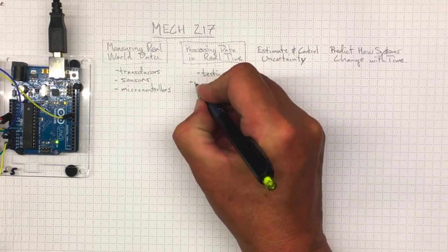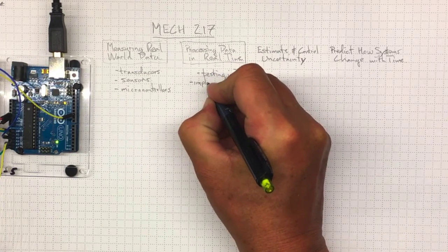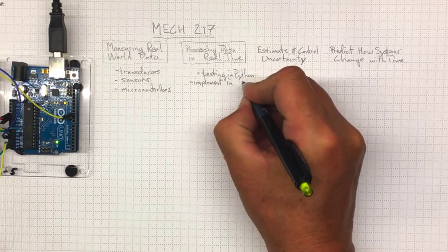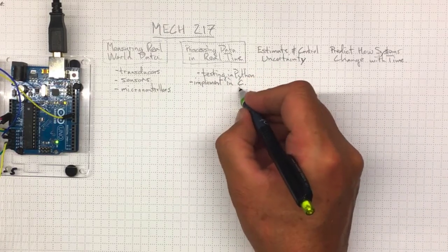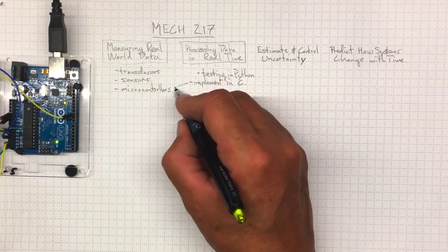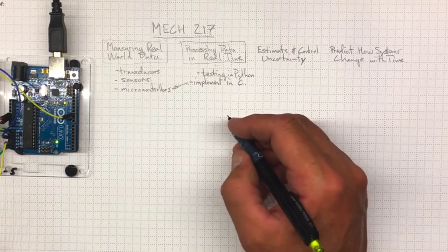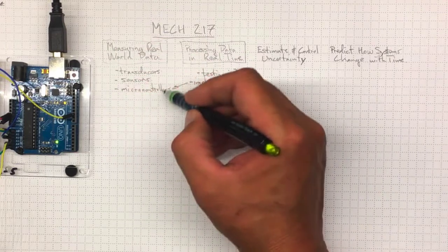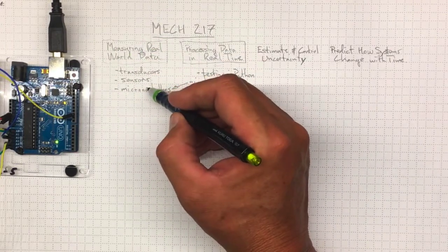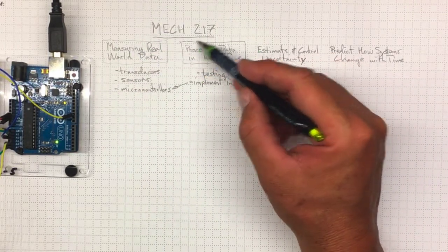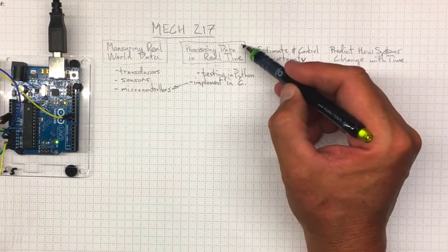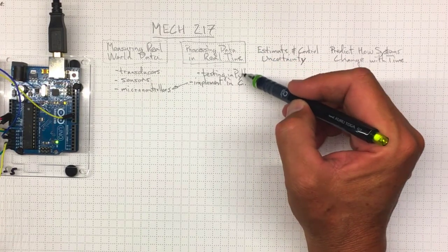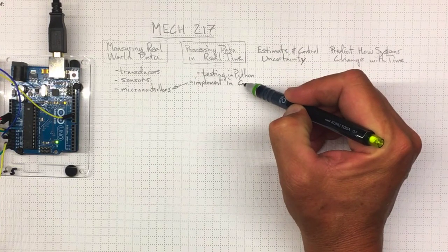But when it comes down to implementation, we really need to be able to implement them in C because the C language is the programming language that will allow us to run those microcontrollers. So we're learning not only about the physical stuff that goes along with measuring real world data, but also about the programming that we need to do to process that data in real time and focusing on two different programming systems.